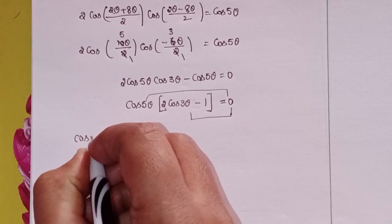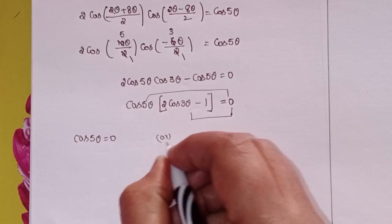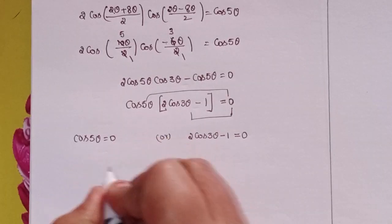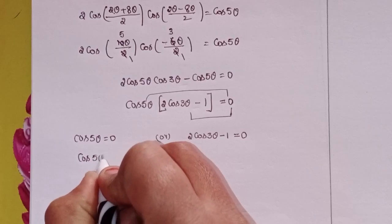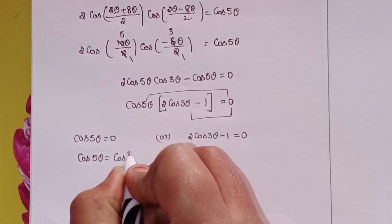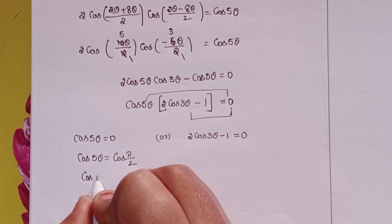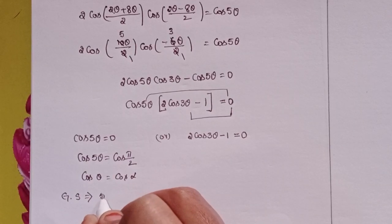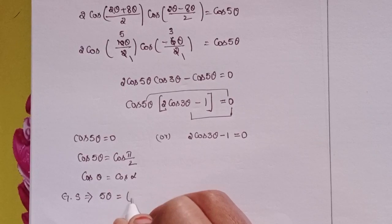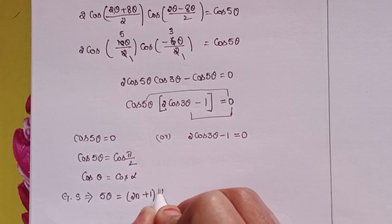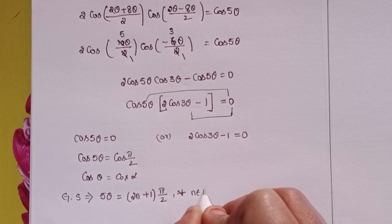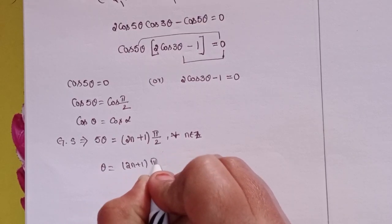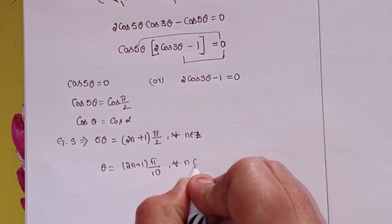So cos5θ = 0, which means cos5θ equals cos90°. Using the general solution cosθ = cosα, we get 5θ = (2n+1)·π/2, therefore θ equals (2n+1)·π/10, for all n belonging to Z.